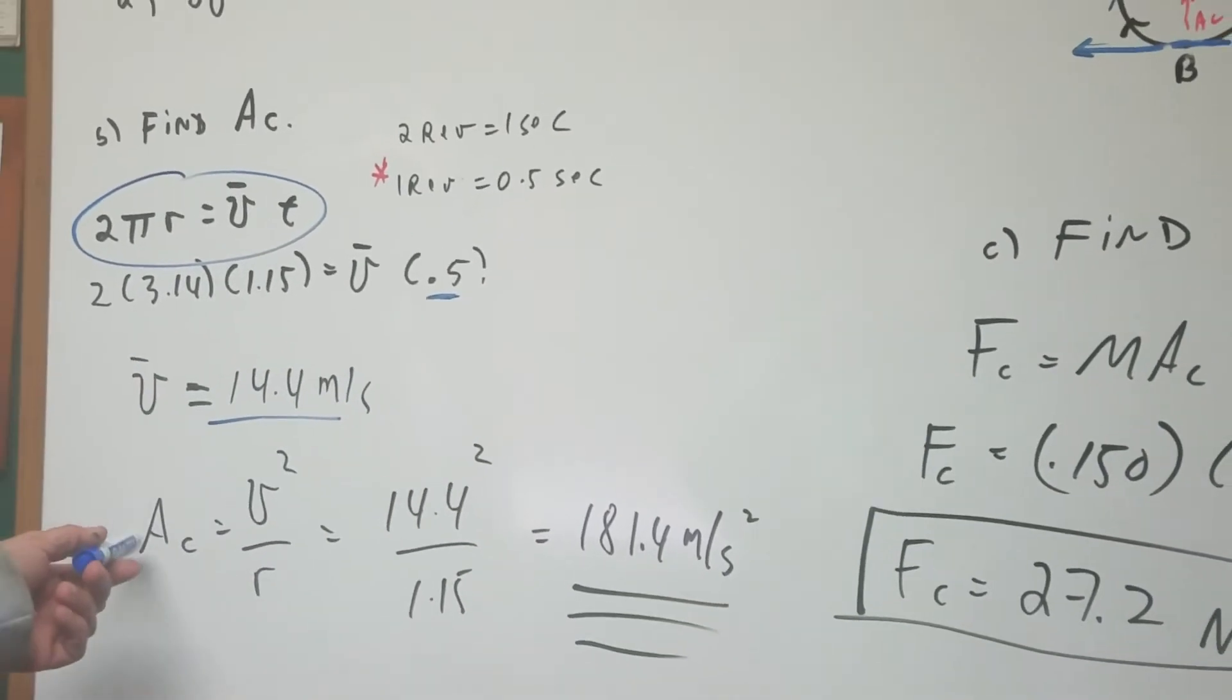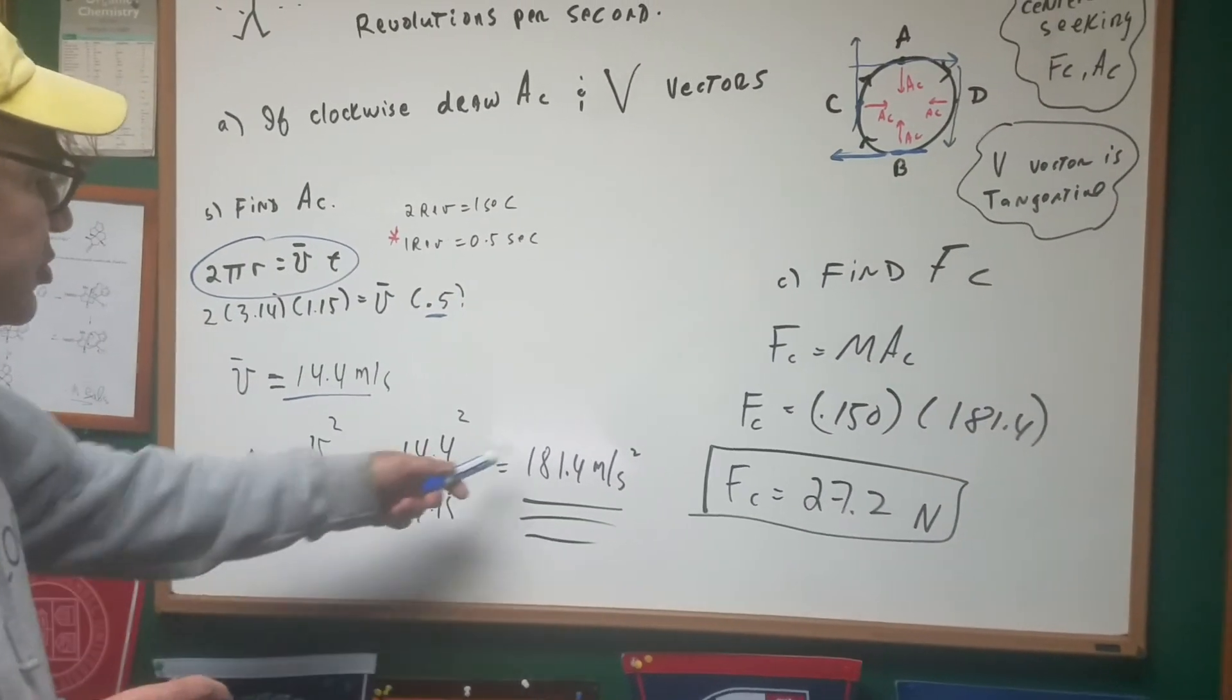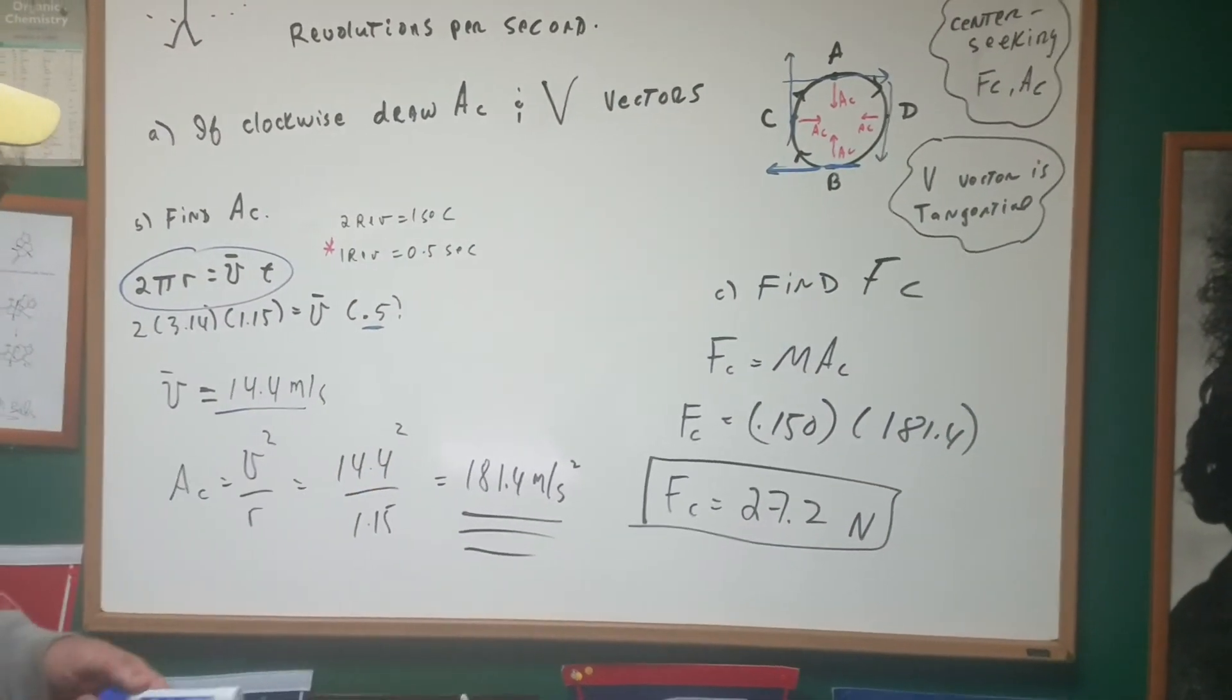The physics questions will have the numbers much nicer on the actual exam. So we got 181.4 meters per second squared.